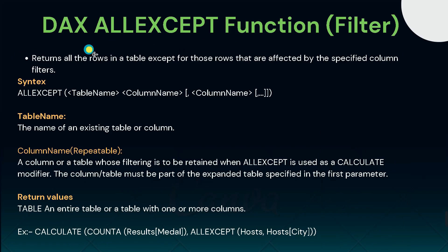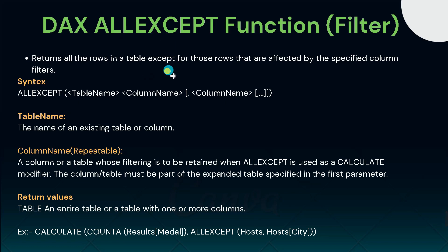The next DAX function is ALLEXCEPT. The ALLEXCEPT function is used to remove all context filters in a table except the filters that have been applied to specified columns. In short, if you have multiple filters and want to remove all except one, ALLEXCEPT is the function to use. Its syntax requires the keyword ALLEXCEPT followed by two arguments inside the bracket: table name and column name.